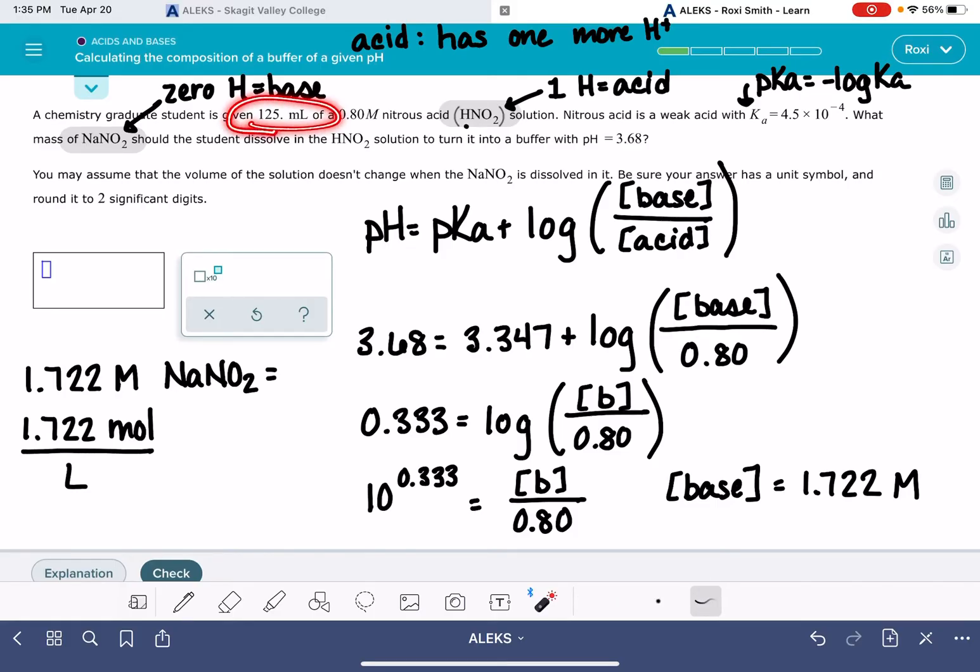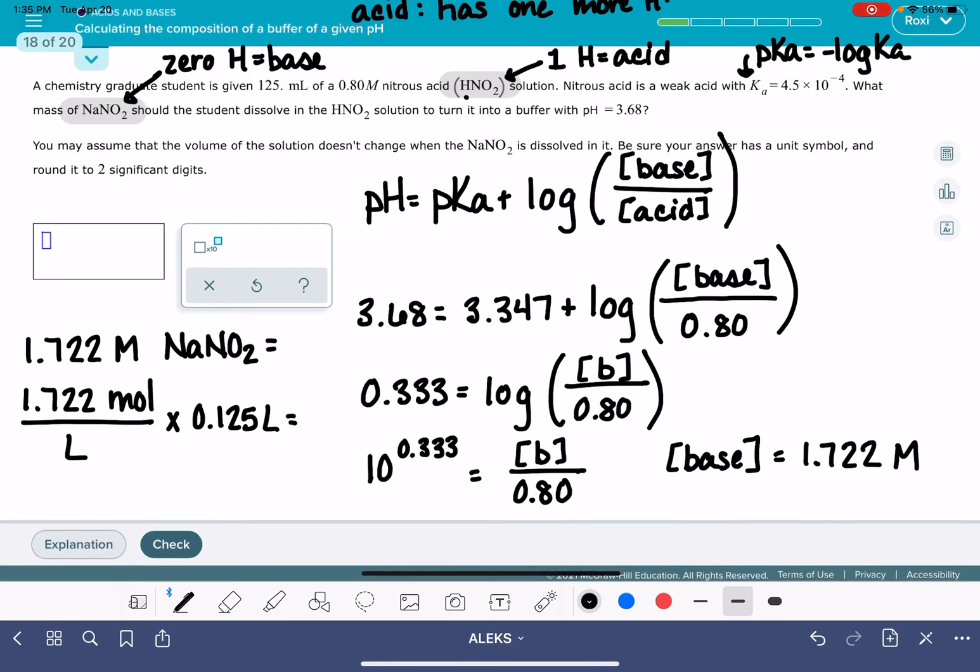The solution that we're dealing with is 125 milliliters, which is the same as 0.125 liters. So we can figure out exactly how many moles we need for our 125 milliliters. These liter units cancel: 0.215 moles of NaNO2.